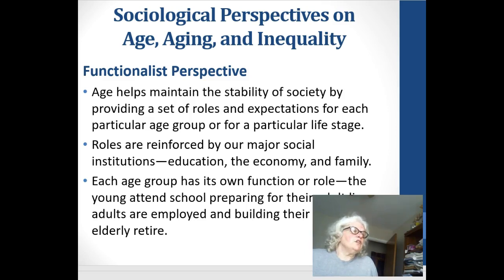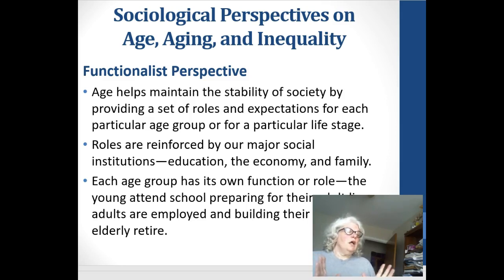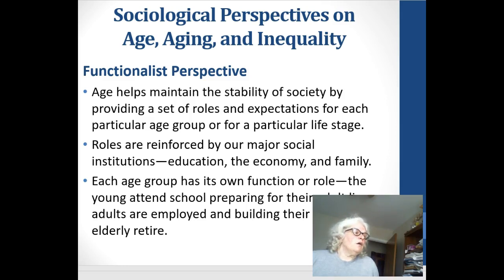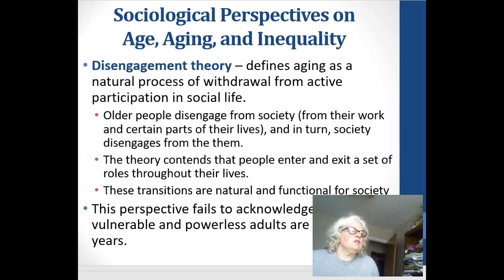The functionalist perspective looks at aging and says age helps maintain stability in society by setting roles and expectations, reinforced by social institutions — education, economy, and family. The economy allows this older population to possibly retire with the support of Social Security. Each group has a function: the young preparing for school, young adults in employment building their lives, and the older adult to retire and support the family. This ties into the aging theory of disengagement, which says the older adult will disengage from society.